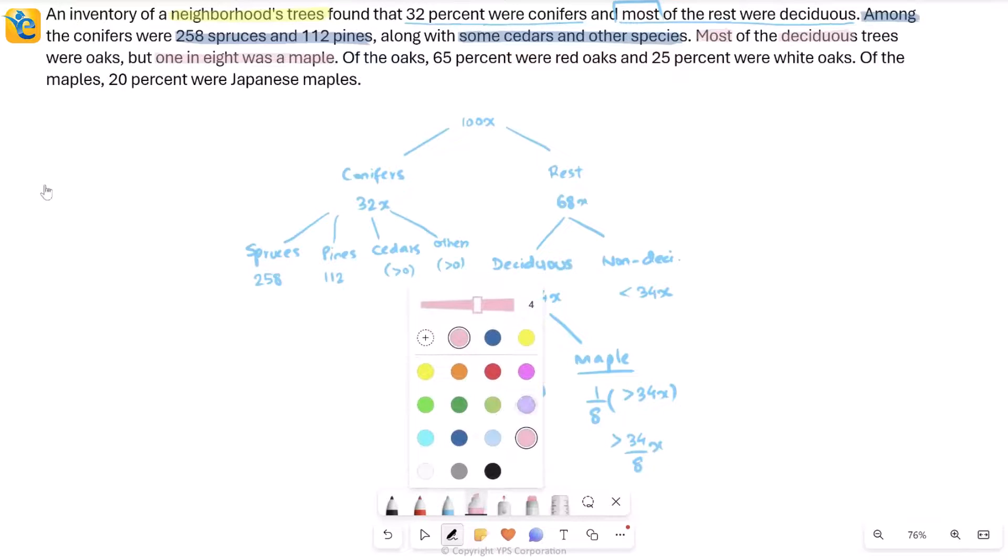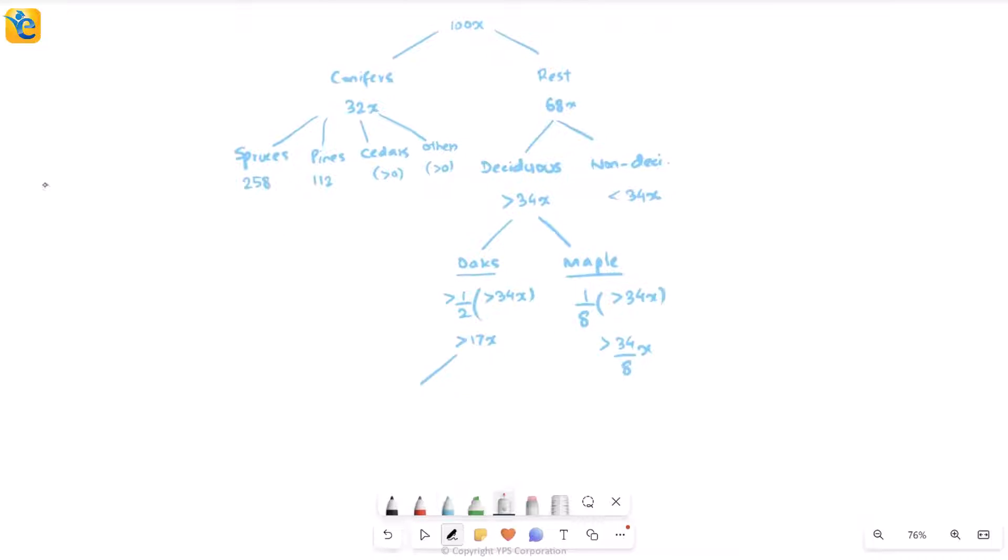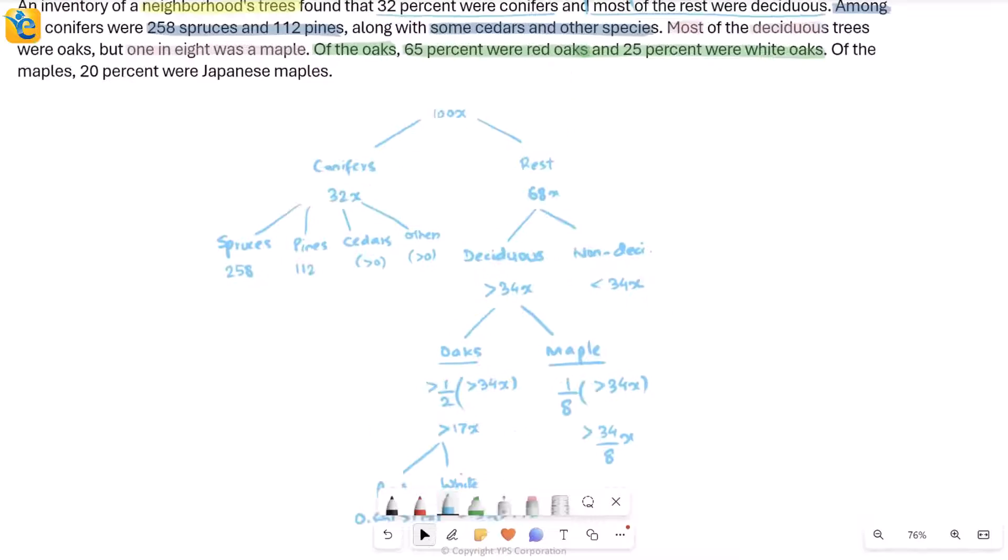Then they're talking further. Still not stopping here. Now they say of the oaks. So this time I will go deeper into the oaks here. Now of the oaks, 65% were red, 25% were white oaks. That means you can go here within oaks to talk about red and white both. Although it's giving me a percentage, I still don't have the number of total oaks anyway. So it will still be something which is in the form of a range. These are the possible values.